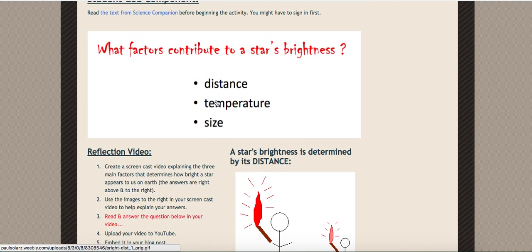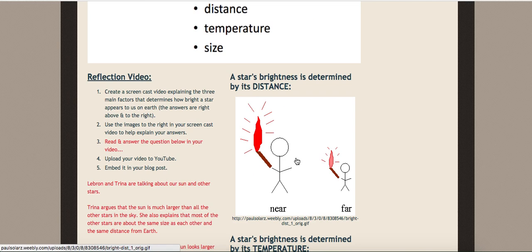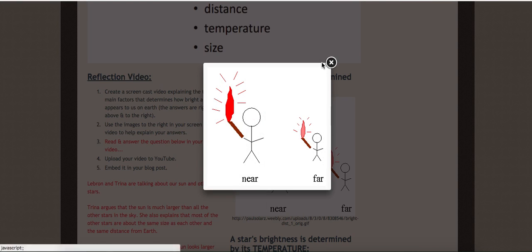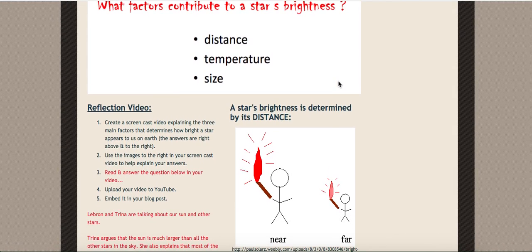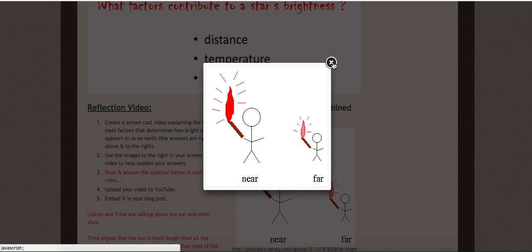That's the color, so the color does matter. That's determined by the temperature, and that's how a star's brightness is measured. The temperature is how bright it is, but it also needs to be close.